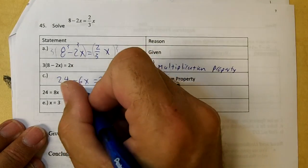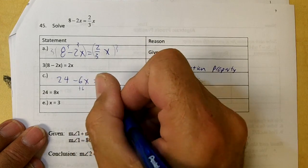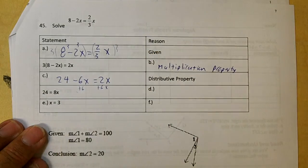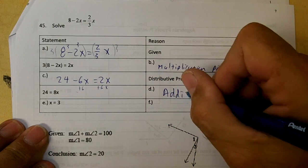The next step is you're going to move that 6x across. Which gives you 2x plus 6x is 8x. That's the addition property of equality.